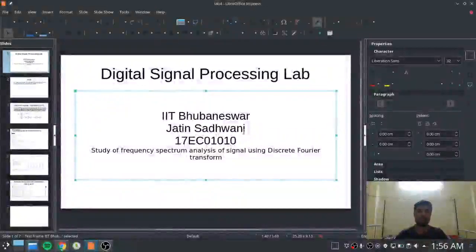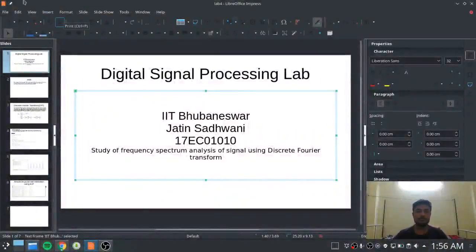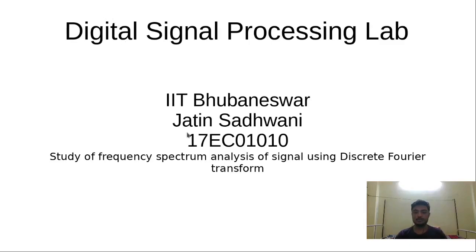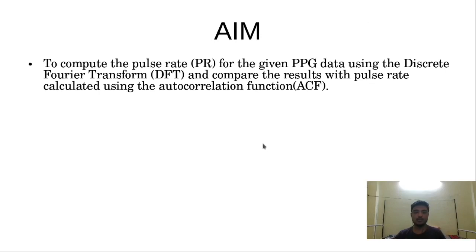Today I'm going to discuss an experiment from the digital signal processing lab which is on frequency spectrum analysis of signal using discrete Fourier transform or DFT. The aim of this experiment is to compute the pulse rate for the given PPG data using the discrete Fourier transform and to compare the results of this pulse rate with the previously calculated pulse rate using autocorrelation function.